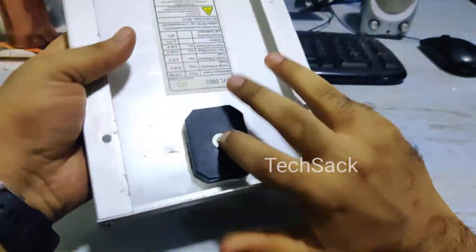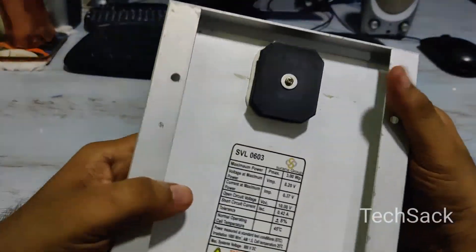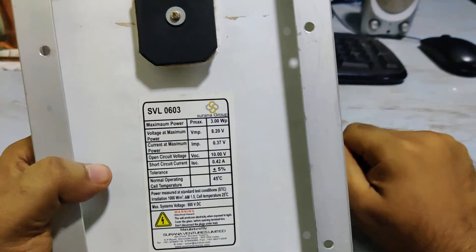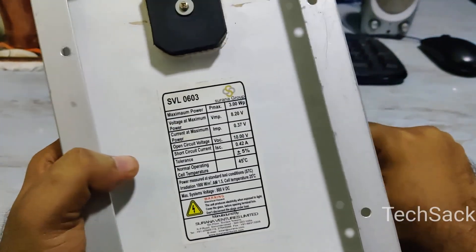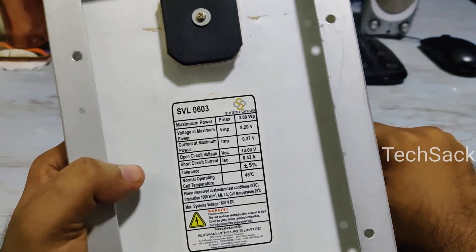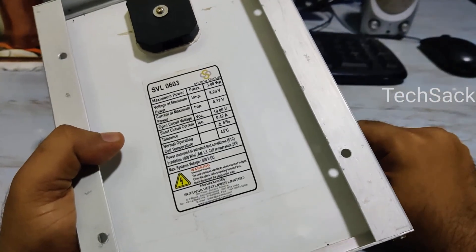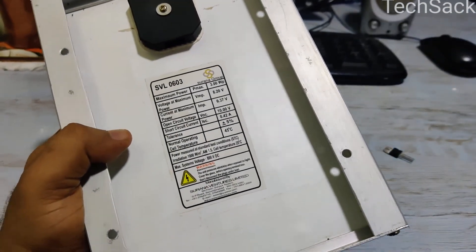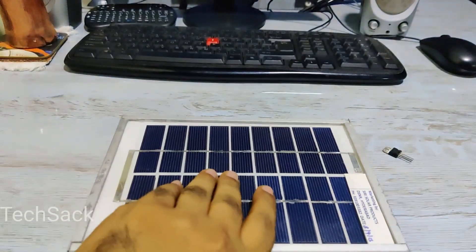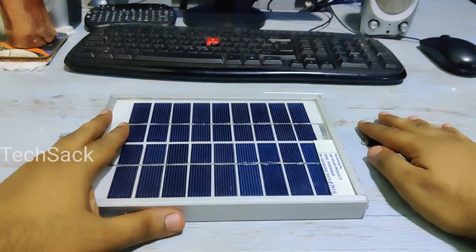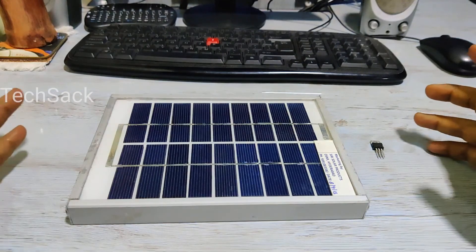The panel I will be using is a 3 watt solar cell which would produce a very small amount of power, however it can still be used to charge cell phones at a slow rate. The output of this panel is 8 volt with maximum current of up to 350 milliamps.